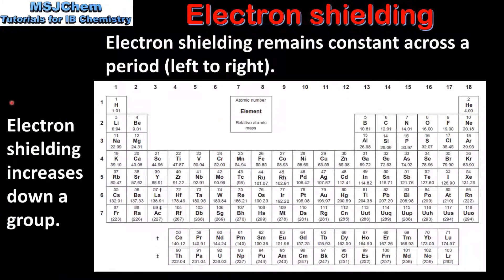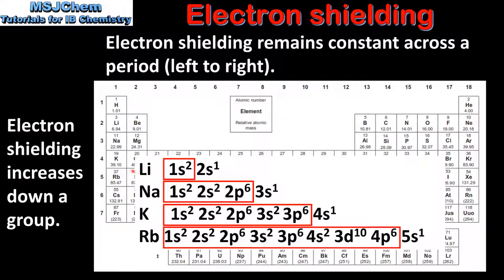Next we look at the trend down a group. Electron shielding increases down a group. Here we have the electron configurations for 4 elements in group 1: lithium, sodium, potassium, and rubidium. If we highlight the shielding electrons within each atom we can see that the number of shielding electrons increases down the group as the number of occupied main energy levels increases. Lithium with its 2 occupied main energy levels has the lowest amount of electron shielding, and rubidium with its 5 occupied main energy levels has the greatest.